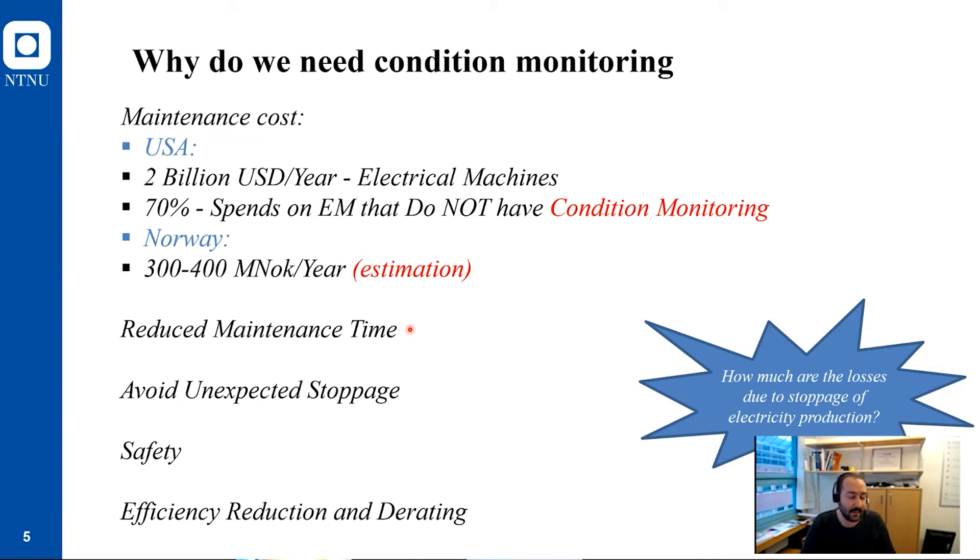If we do not have a condition monitoring system we cannot avoid unexpected stoppage of the machine. Imagine if the power plant is located on a runoff river, we cannot stop the water, so you're losing money. In addition, safety is also important. In the worst case the fault could lead to burning out the machine and it's really dangerous for an operator in a power plant. Efficiency reduction is also a consequence of the fault in a machine. When we have a fault you cannot operate the machine up to its nominal power.